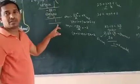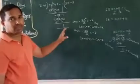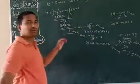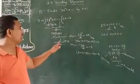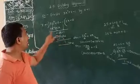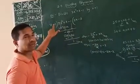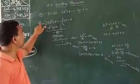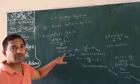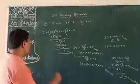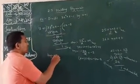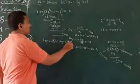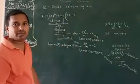This 1 is a constant polynomial. What is the degree of the constant polynomial? 0. So the degree of this remainder is 0, which is less than the degree of the divisor. The degree of the divisor is 1, because the highest power of x is 1, so x power 1. Since the degree of the remainder is less than the degree of the divisor, this is the last step of the division process.